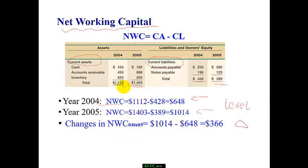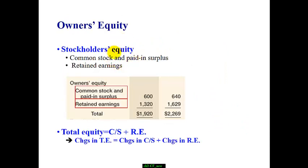Also pay attention to owner's equity or shareholder's equity. Owner's equity can be broken into two components: common stock and paid-in surplus, and retained earnings. Common stock reflects activities where you're buying or selling stock. Retained earnings reflect the cash reserves a company has accumulated from past earnings. Total equity equals common stock activity plus retained earnings. The change in common stock plus change in retained earnings will be summarized in the change in total equity.